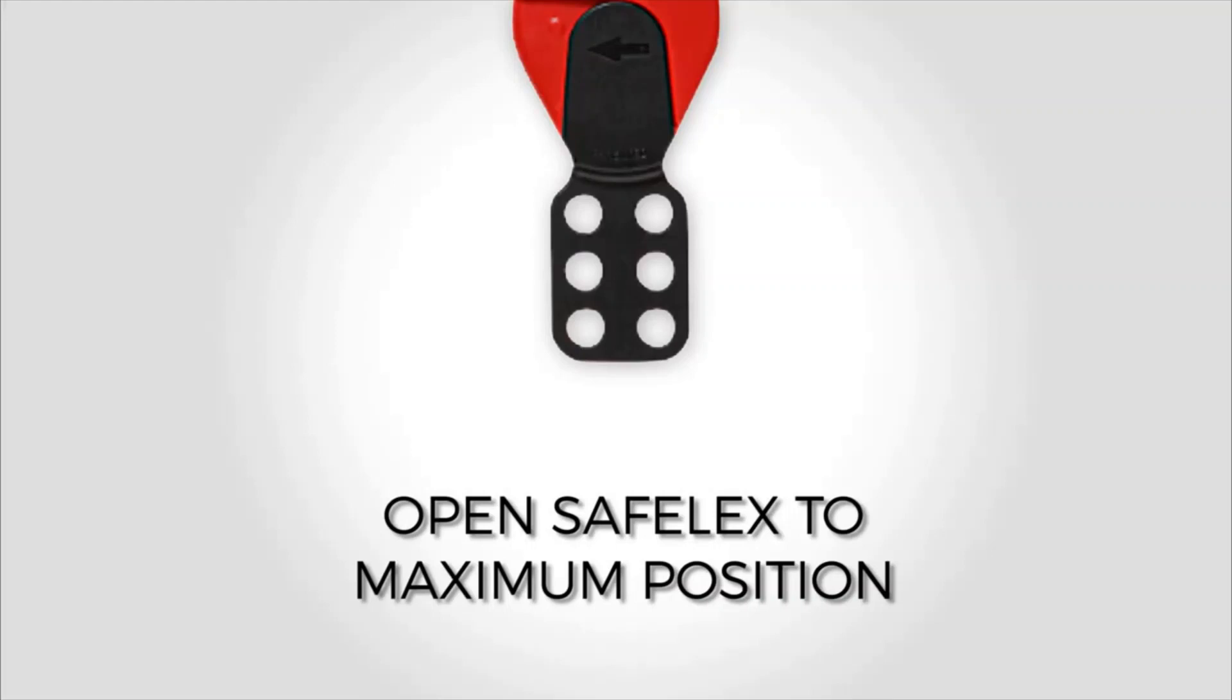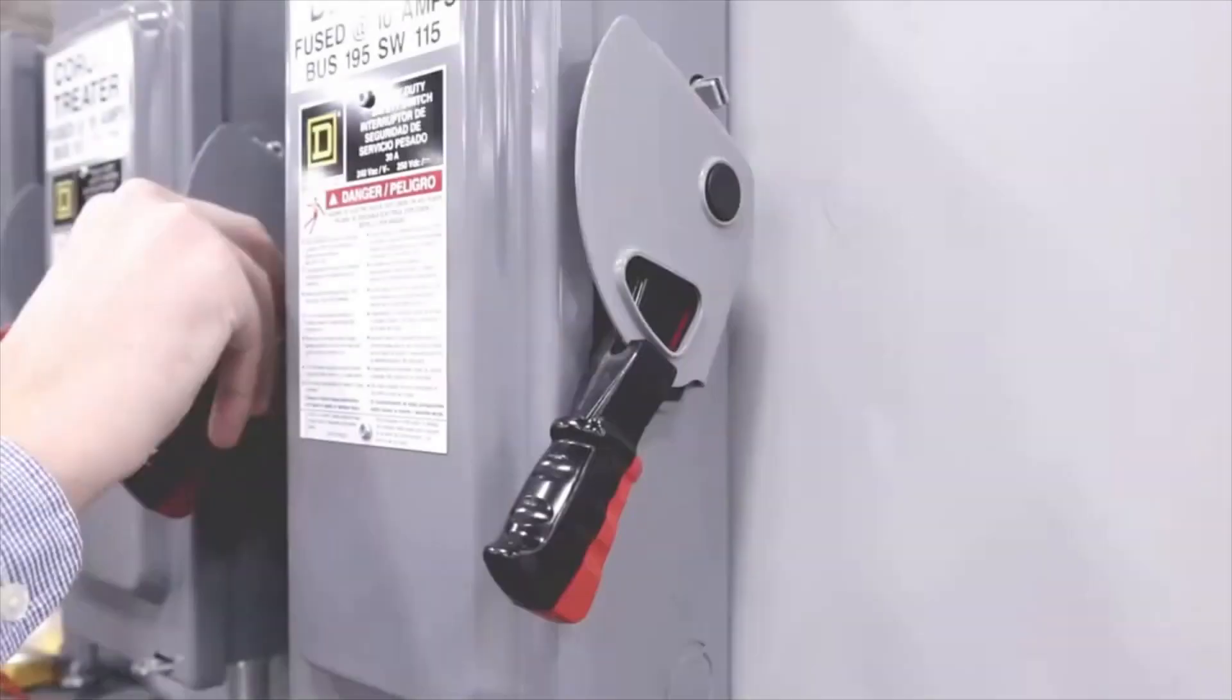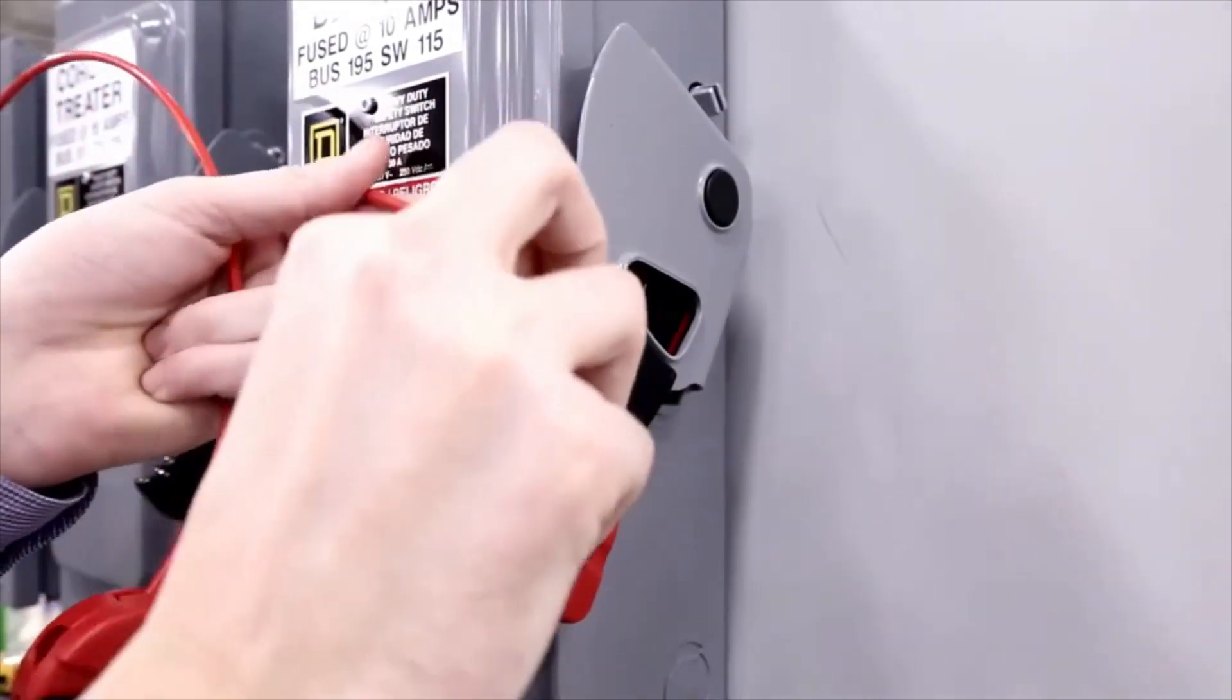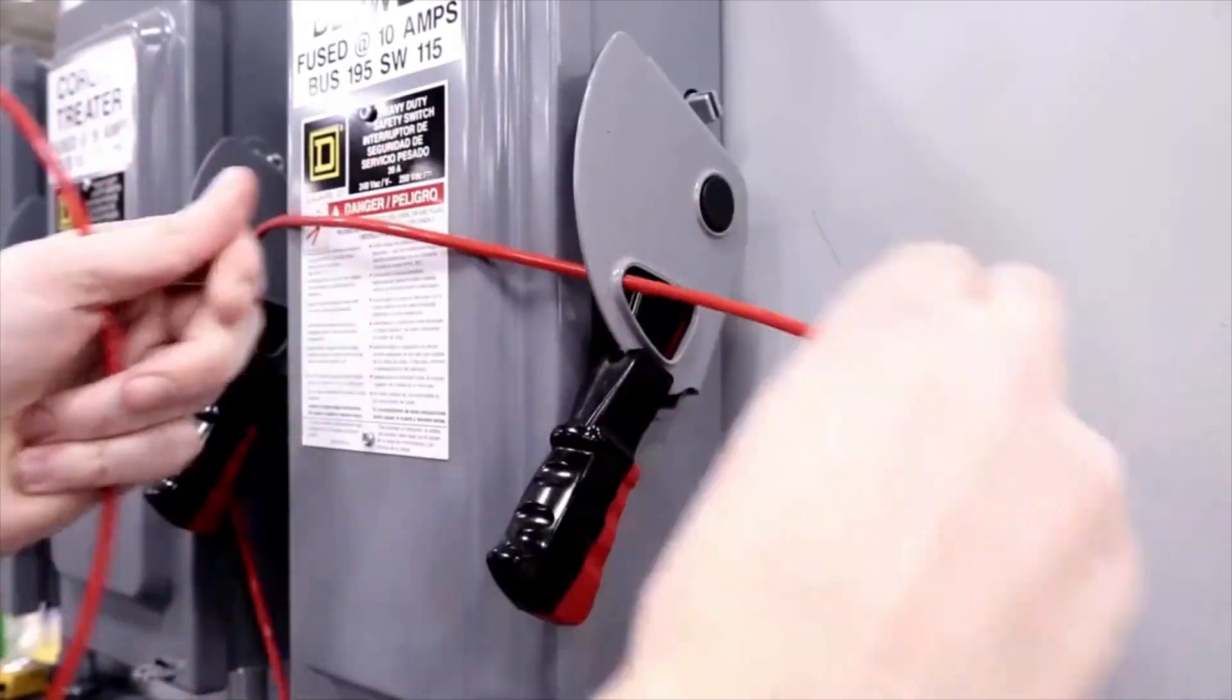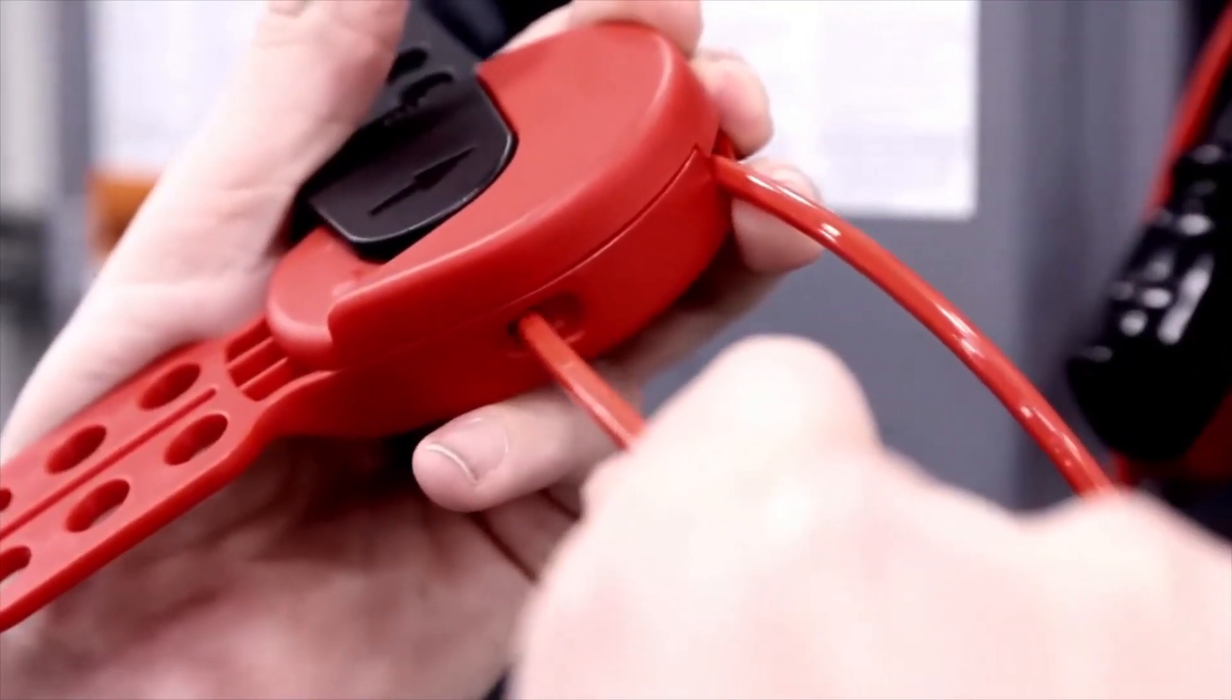Open the Safelex handle to maximum position. Thread nylon cable through each door handle. Thread cable back through Safelex to close loop.